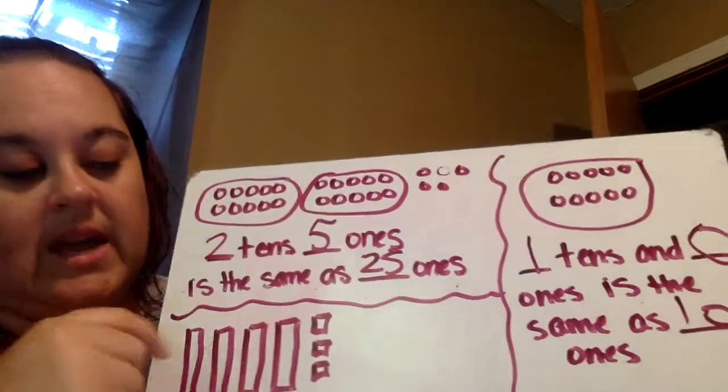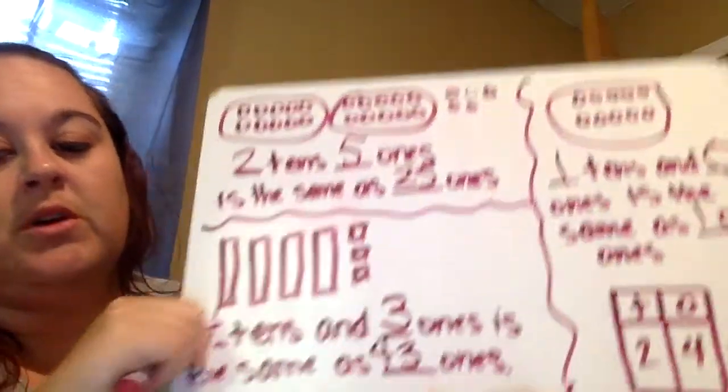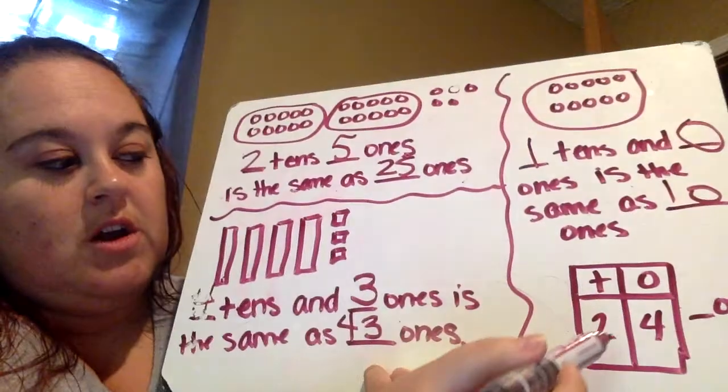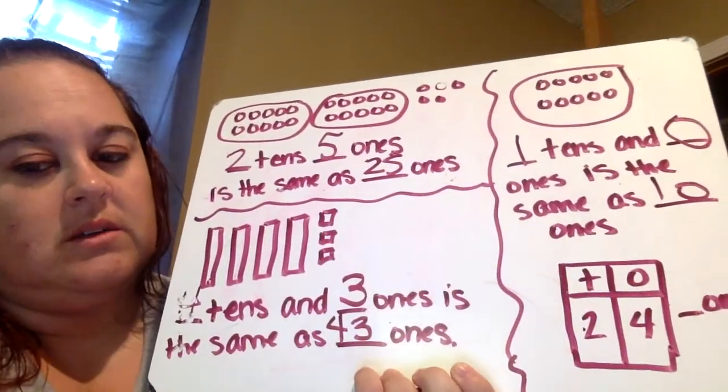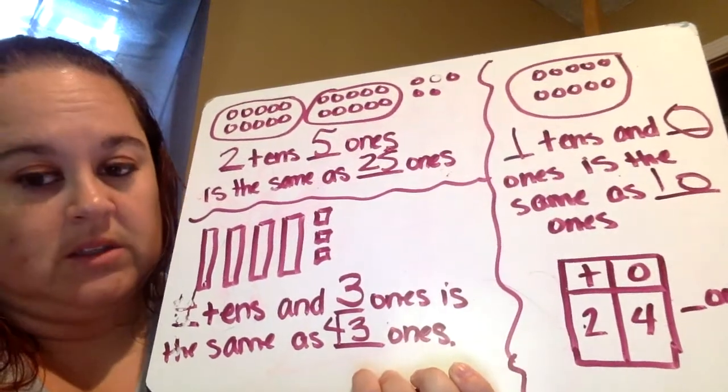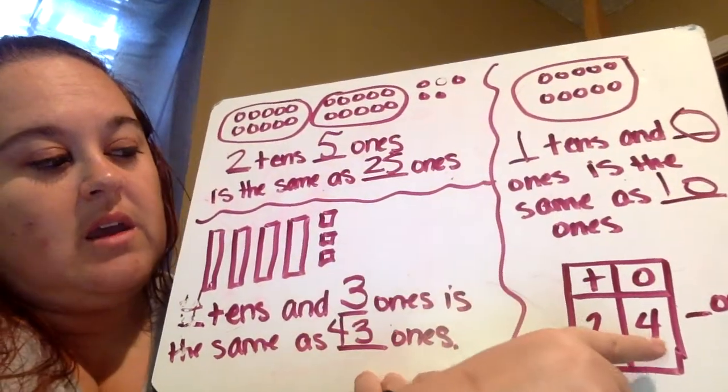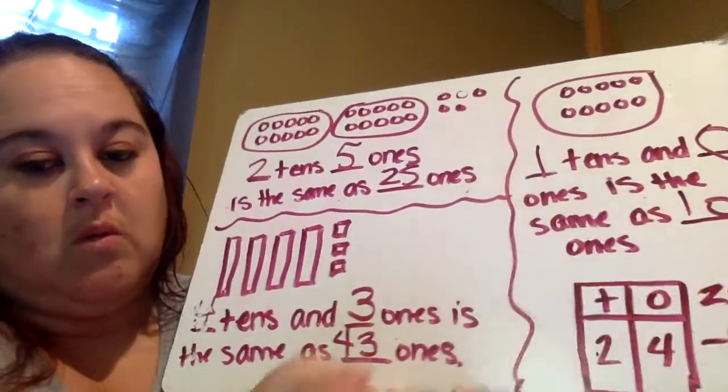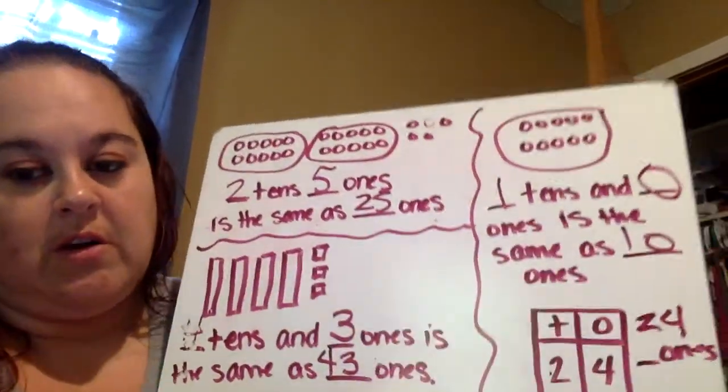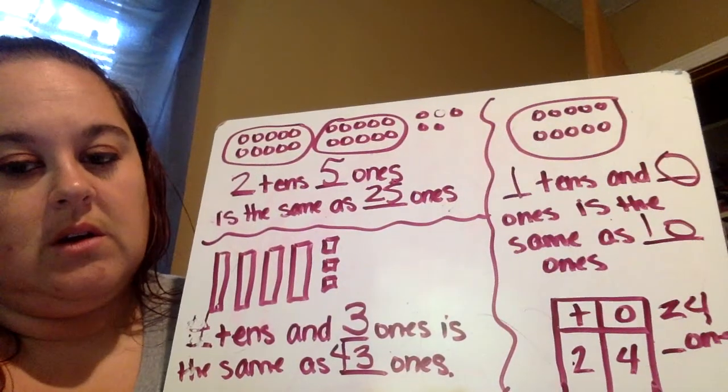So your work today is the exact same as this. Oh, there is one more. I put it in a chart down here. So if you have two tens and four ones. Two tens is twenty ones. So twenty and four more ones is twenty-four ones. You can't really see that four. There you go. Twenty-four ones.